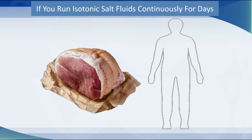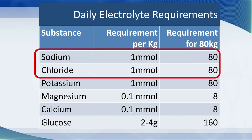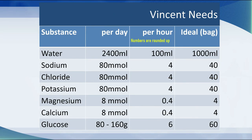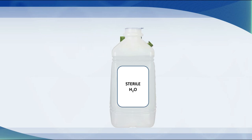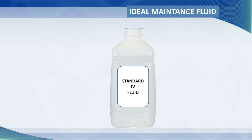So what should we be giving Vincent? He needs 2.4 litres of water per day — 100 mils an hour. He needs about 80 millimoles of sodium and chloride. Figuring this out: ideally per hour he would get 100 mils of water, 4 millimoles of sodium, 4 millimoles of chloride, 4 millimoles of potassium, and about a tenth of that of magnesium and calcium. Or ideally, a bag containing 40 millimoles of sodium, 40 millimoles of potassium, 40 millimoles of chloride, a bit of magnesium — possibly not calcium due to blood clotting in tubing. So our perfect IV fluid would have 40 each of sodium and chloride, 40 of potassium, about 4 of magnesium, buffered with lactate, acetate, or gluconate, and about 60 grams of glucose.